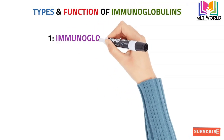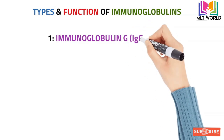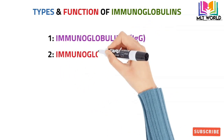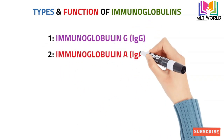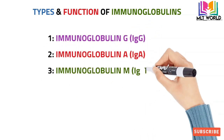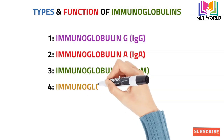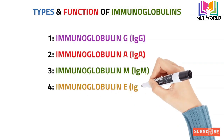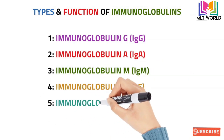Now we will discuss the types of immunoglobulin and then the function of each type. There are five types of immunoglobulin: Immunoglobulin G, A, M, E, and D.